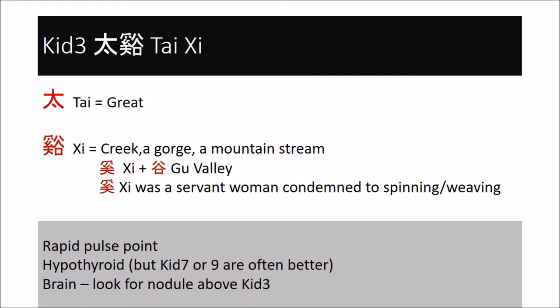I do not have a clear explanation for the name of kidney three, Tai Xi, the great creek. Xi creek is in the characters of many points that are between tendons, and kidney three is definitely in that kind of space. The Shu-stream Yuan points of the five yin channels all have either Tai — great — as in spleen three Tai Bai, liver three Tai Chong, lung nine Tai Yuan, or in the case of the pericardium Da, big, as in pericardium seven Da Ling. Heart seven is the exception, and that may be due to the heart channel being envisioned at a later period with different ideas.